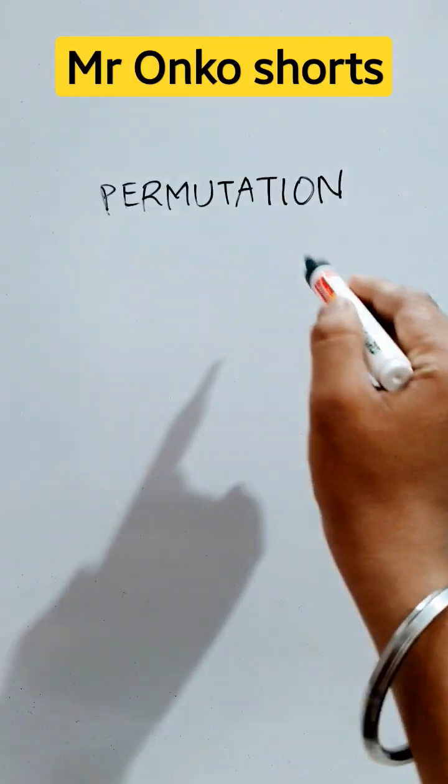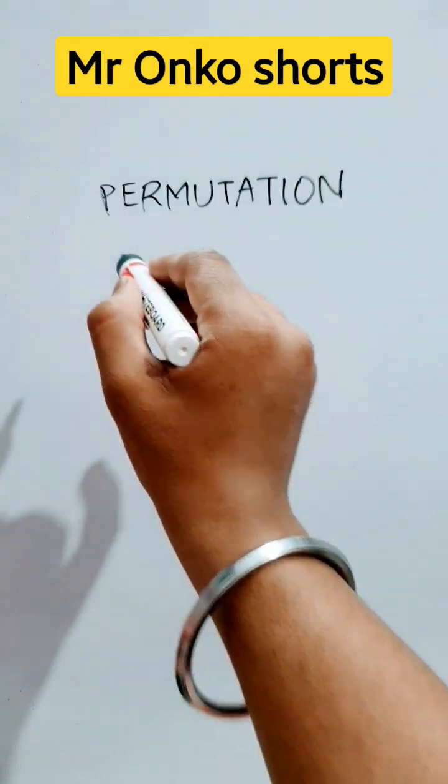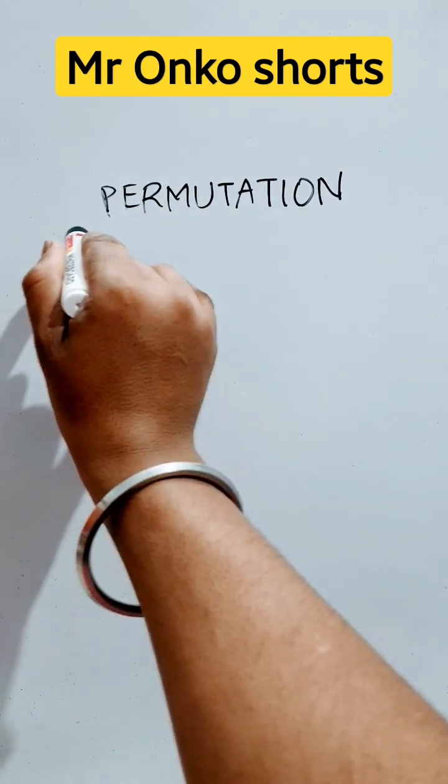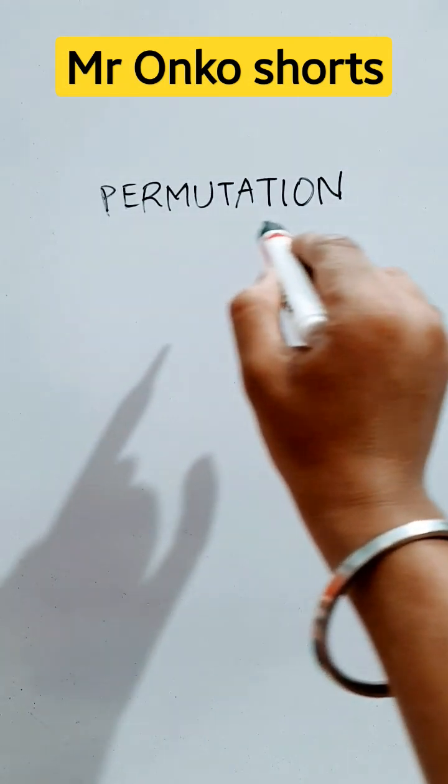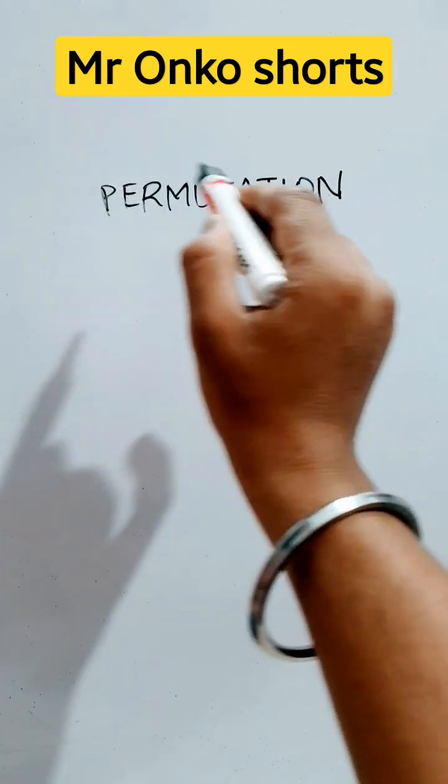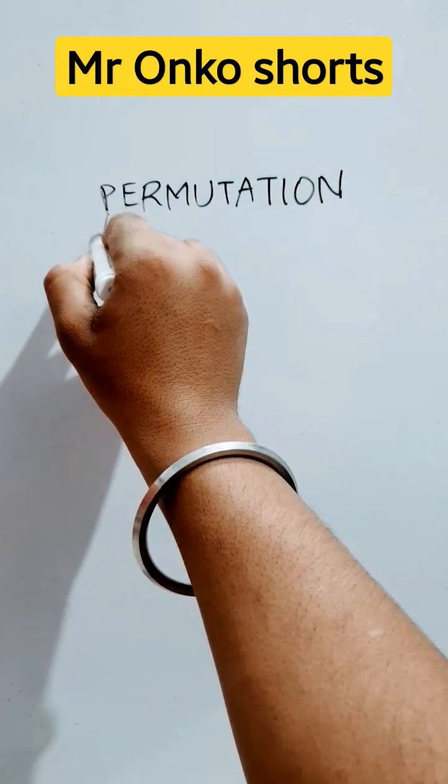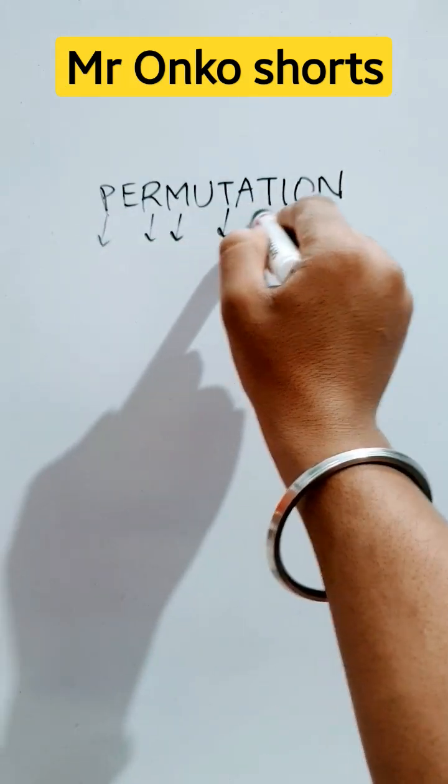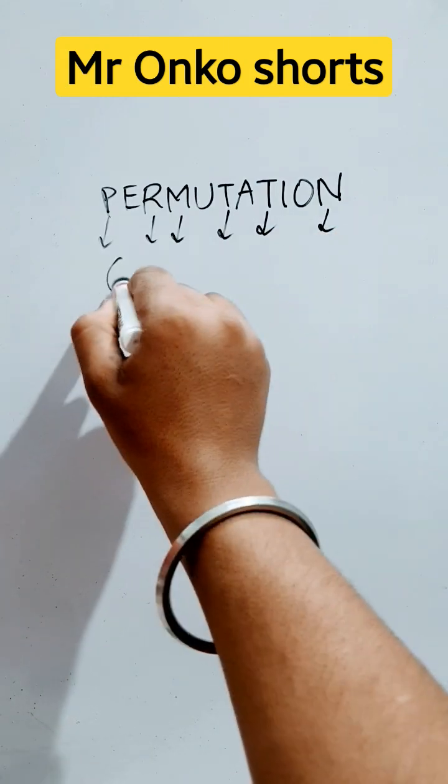Hello students, welcome to Mr Onko Shorts. Today we will learn how many words can be formed using the letters of the given word PERMUTATION. Let's count the consonants and vowels. One, two, three, four, five, six - six consonants.